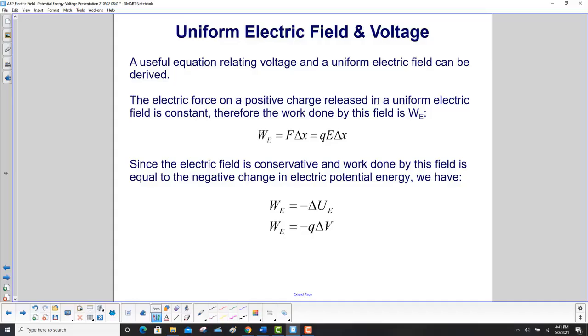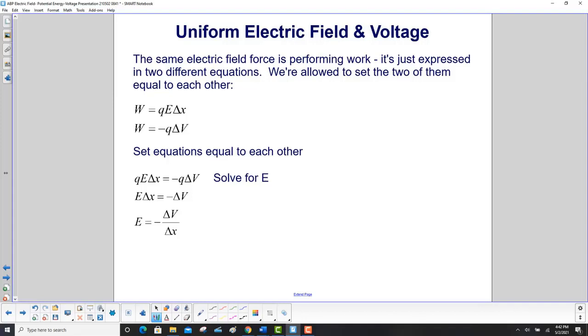A useful equation relating voltage in a uniform electric field can be derived. The electric force on a positive charge released in a uniform electric field is constant. Therefore, the work done by this field, where E stands for electric field this time, not external. External would be ext. So the work is F delta x and the force is just qE delta x. Since the electric field is conservative and work done by this field is equal to the negative change in electric potential energy, we have this expression here. And then what's delta UE? Why that's q delta V. So we have work done by the electric field is minus q delta V.